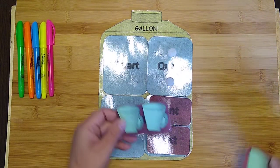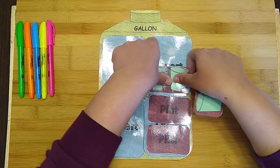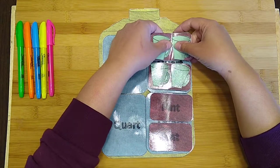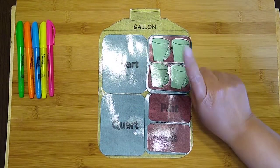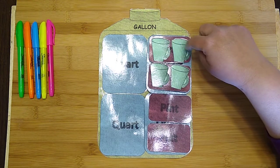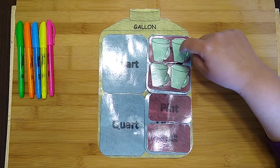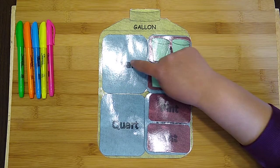And then inside of a pint I have two cups. A lot of times we use cups in measurements when we're cooking and making recipes. So there's two cups in one pint. I wonder how many cups do you think are in a quart? Let's see, one, two, three, four. There's four in one quart.